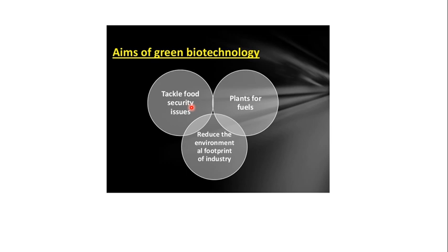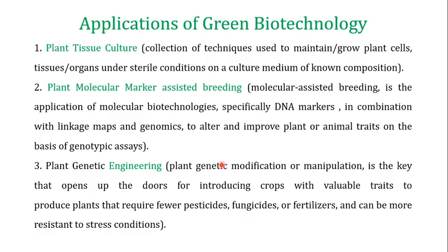The aim of green biotechnology is to tackle food security issues, as the world's population is increasing and we need strategies to ensure all people have access to food. Another important aim is to produce plant-based fuels, since energy is a critical issue today, helping in the production of biofuels. Green biotechnology also focuses on reducing environmental pollution from industries by using techniques such as phytoremediation to remove hazardous products.